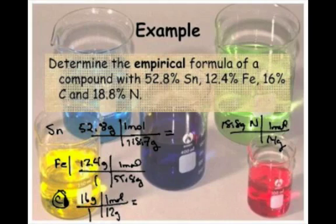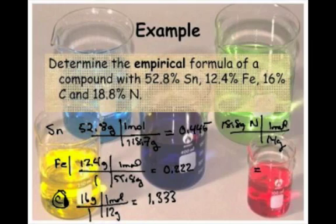Now I get my calculator out. So for the tin, 52.8 divided by 118.7 is 0.445. And then 12.4 divided by 55.8 is 0.222. For carbon, 16 divided by 12 is 1.33. And this last one is 1.34.